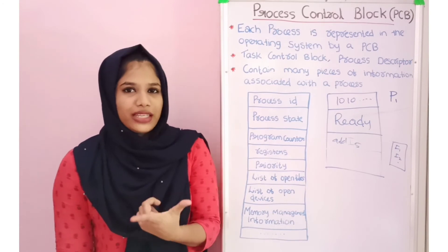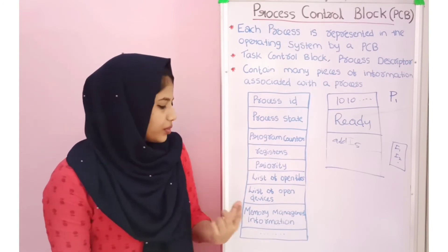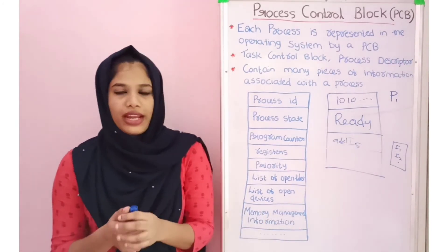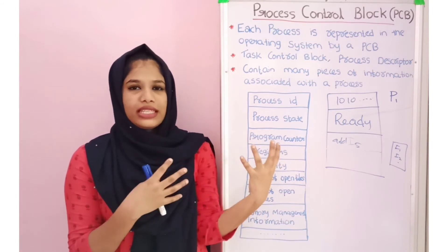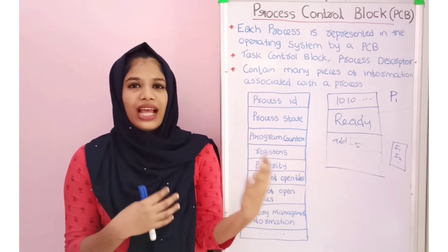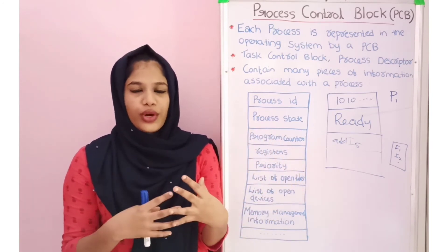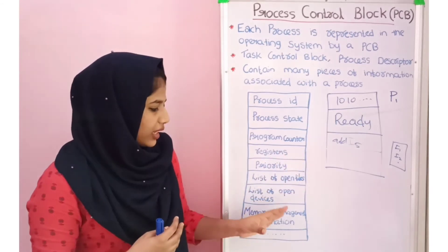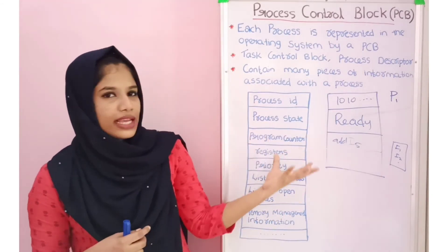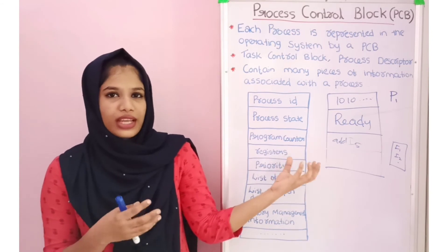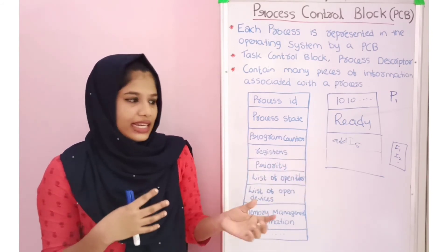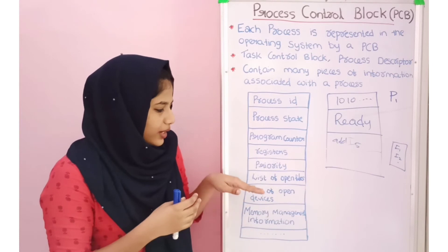Next is memory management information. We use the system's memory management scheme. This field contains details such as paging information and segmentation information — all memory-related information used by the process is stored here in the PCB.